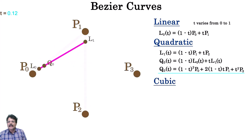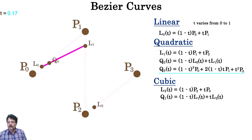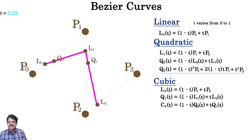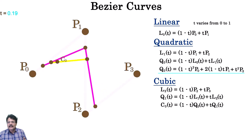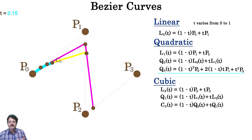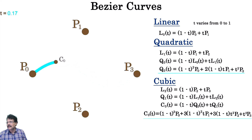For a cubic Bézier curve we need to add another control point P3. We do a linear interpolation between P2 and P3 and call it L2, then another interpolation between L1 and L2, and finally interpolate between Q0 and Q1. We can rewrite this function into a standard form and this is what is known as a cubic Bézier curve. So a quadratic Bézier curve is just an interpolation between two linear interpolations, and the cubic Bézier curve is an interpolation between two quadratic curves.